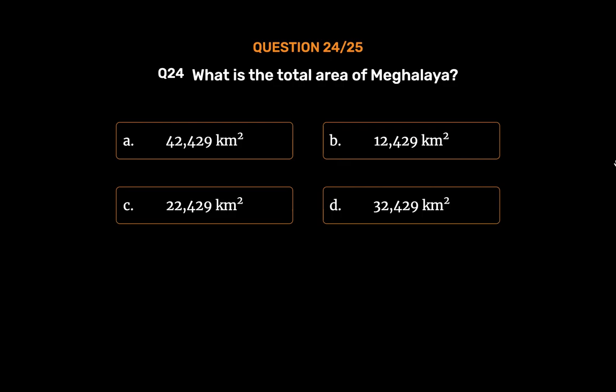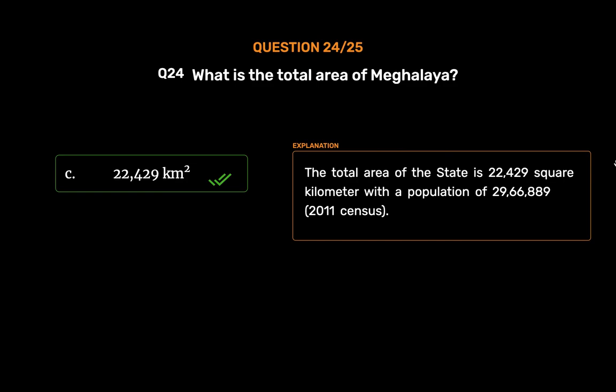The correct answer is Option C: 22,429 square kilometers. The total area of the state is 22,429 square kilometers with a population of 29,66,889 (2011 census).